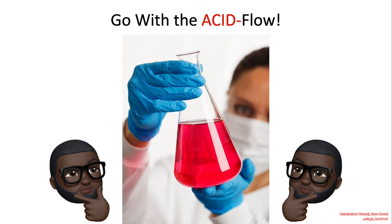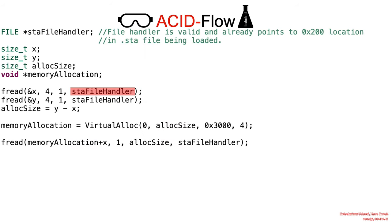Welcome back. Let's trace the arbitrary code execution flow. So at the moment, the STA file handler points to a region within the file. The code begins by initializing the values for X and Y. At this point, both X and Y contain attacker-controlled input data.